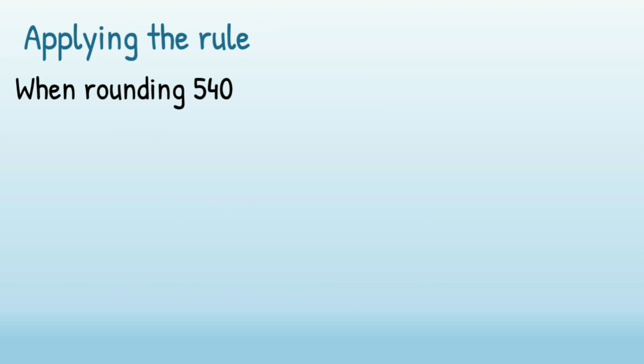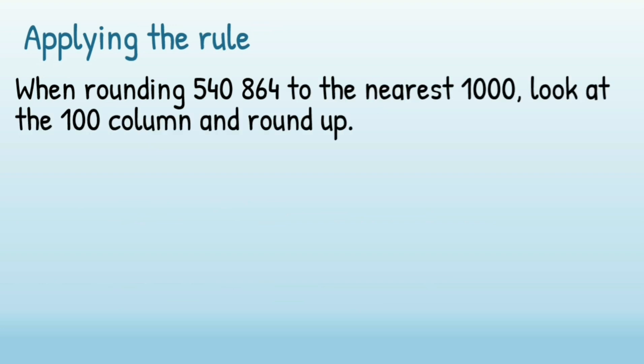So if we apply the rule, when you're rounding a number like 540,864 to the nearest 1,000, you would look at the 100 column and you would round up. The 100 column is 8 there, so you've got 800 in that value. That would make your thousands round up to 541,000.